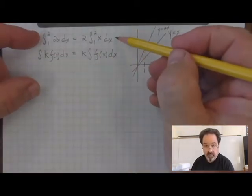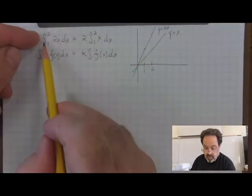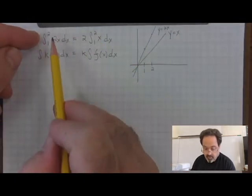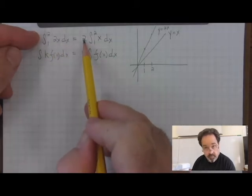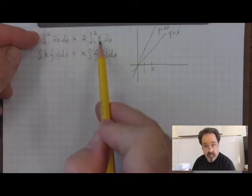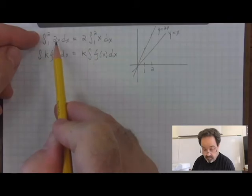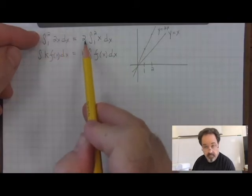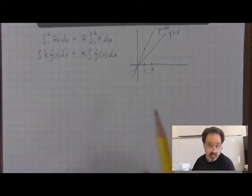In this specific example, the area under 2x is equal to 2 times the area under x. The constant 2 was brought out in front to multiply after integrating.